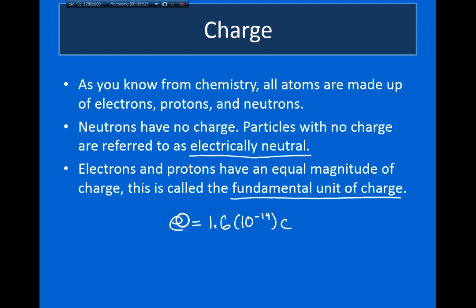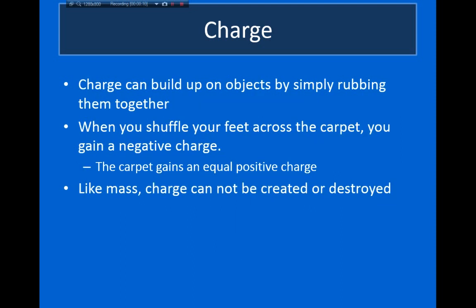A proton has a charge of +e and an electron has a charge of −e. Any larger charge is always equal to an integer multiple of the fundamental unit of charge, because objects gain charge by gaining or losing electrons. For example, when you shuffle your feet across the carpet in socks, electrons transfer from the carpet to your socks. Because charge transfer corresponds to actual physical particles moving, charge is never created or destroyed.